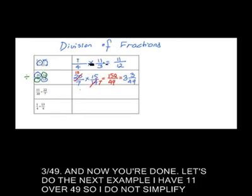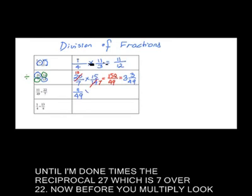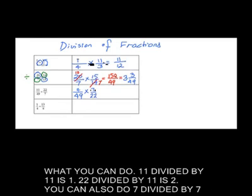Let's do the next example. I have 11 over 49, so I do not simplify until I'm done, times the reciprocal 22/7, which is 7 over 22. Now, before you multiply, look what you can do.